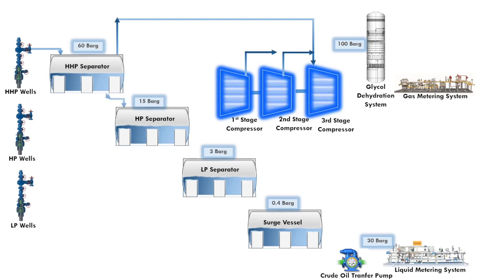The liquid of the HHP separator will enter the inlet of the high pressure separator, or simply known as the HP separator. The pressure is reduced using a pressure control valve at the top of the HP separator. The gas discharged from the top of the HP separator will enter the inlet of the second stage compressor.